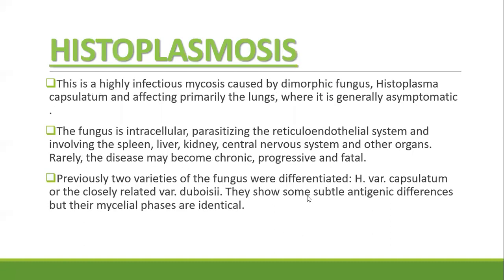The first infection we are going to discuss is histoplasmosis. Histoplasmosis is a highly infectious mycosis caused by the dimorphic fungus Histoplasma capsulatum, and affects primarily the lungs where it is generally asymptomatic. The fungus is intracellular, parasitizing the reticuloendothelial system, and involves the spleen, liver, kidney, CNS and other organs. Rarely the disease may become chronic, progressive, and fatal.